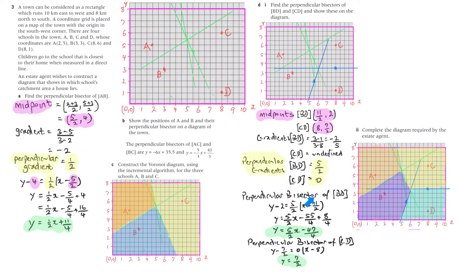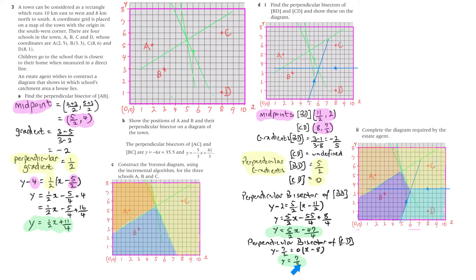To find the equations: for the perpendicular bisector of BD, we use the midpoint (11/2, 2) and gradient 5/2 in y minus y1 equals m times (x minus x1), giving that equation for the BD perpendicular bisector — expecting a positive slope, and it's positive. For CD, this line is just y = 3.5, or y = 7/2. Using the formula: y minus 7/2 equals 0 times (x minus x1), so y equals 7/2.